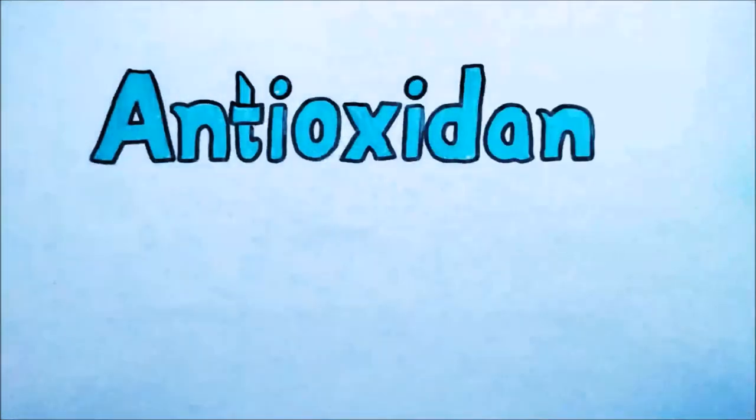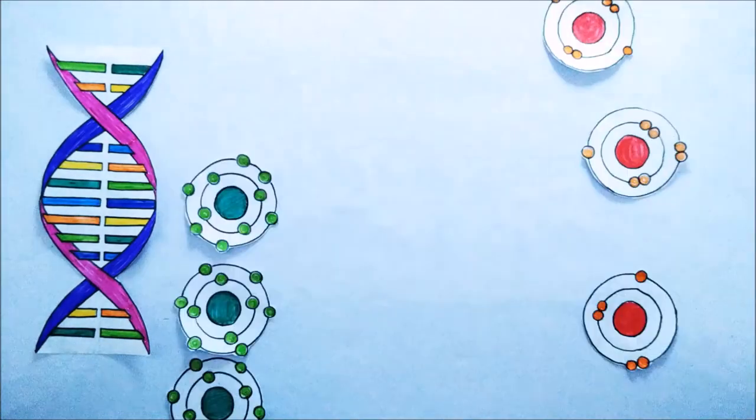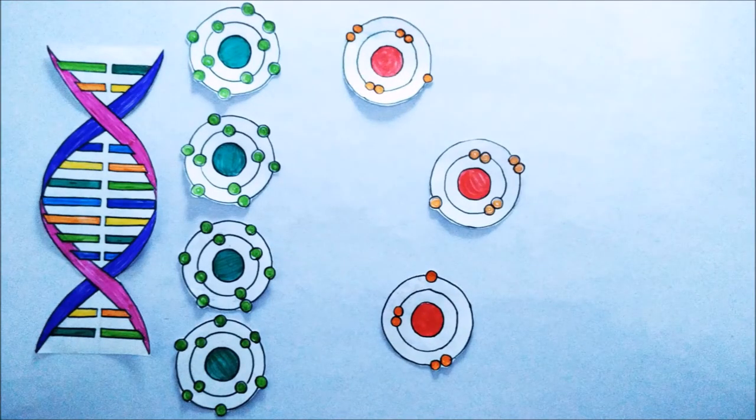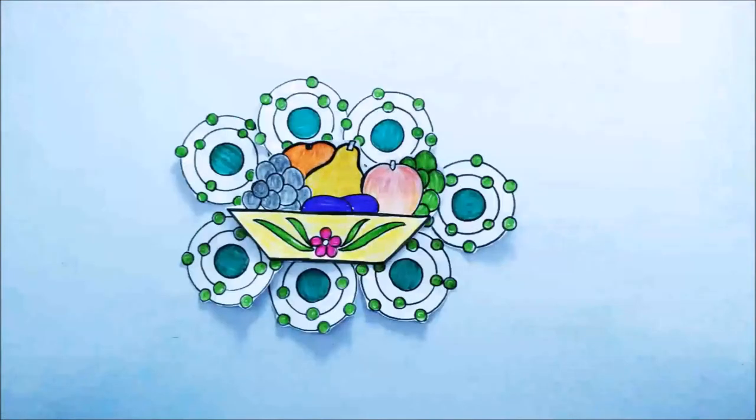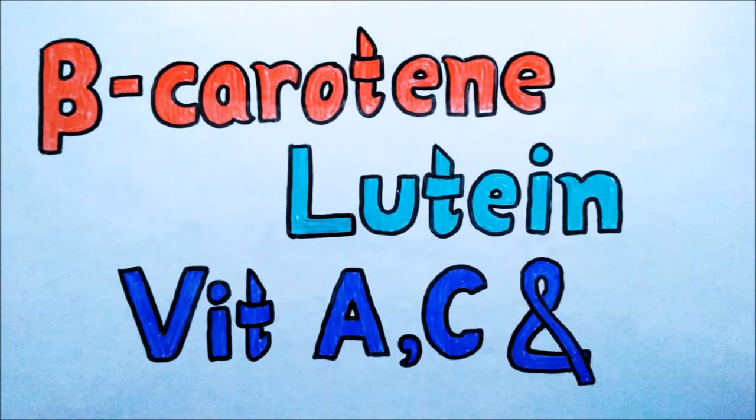To counter these harmful effects of free radicals, our body produces antioxidants and some enzymes. What are antioxidants? Antioxidants are molecules that can help prevent certain types of cell damage caused by free radicals or oxidation. The antioxidants can also be acquired from diet. Fruits and vegetables naturally provide lots of antioxidants like beta-carotene, lutein and vitamins A, C and E.